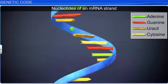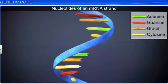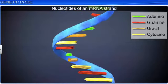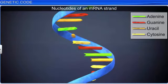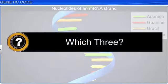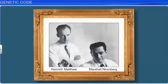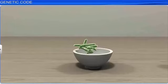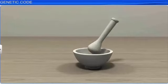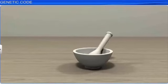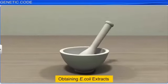Though scientists were now aware that a combination of three nucleotides was all that was required to make a particular code, they had another question: which combination of nucleotides coded which amino acid? The answer to these questions came from research scientists Marshall Nirenberg and Heinrich Mattei. They created a free cell system by grinding E. coli bacteria using a mortar and pestle to obtain E. coli extracts.